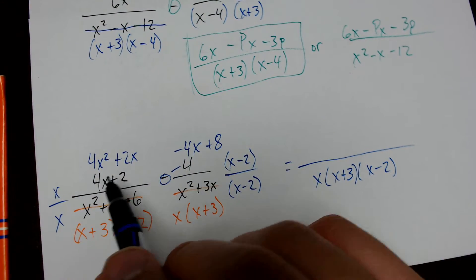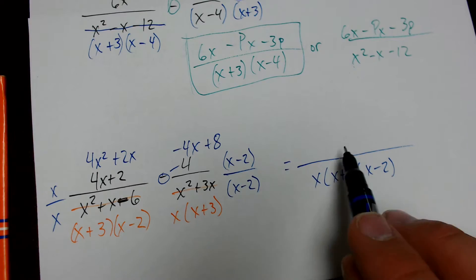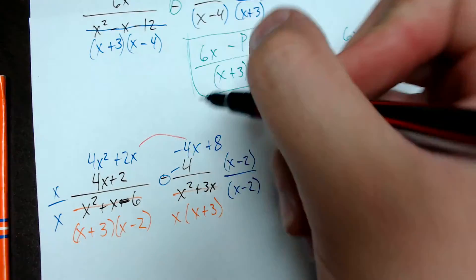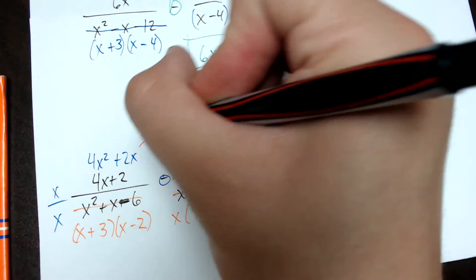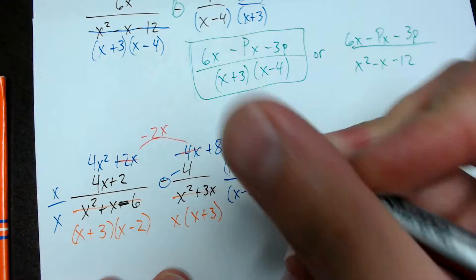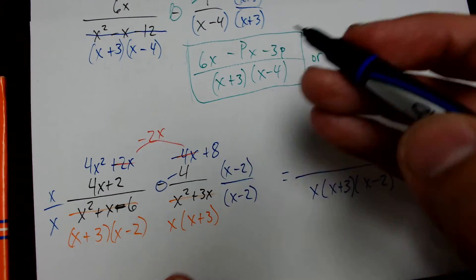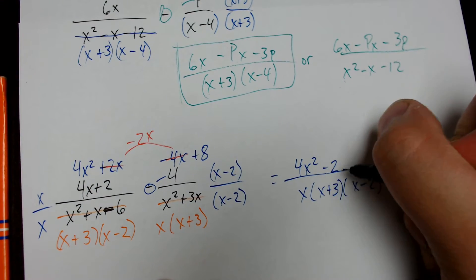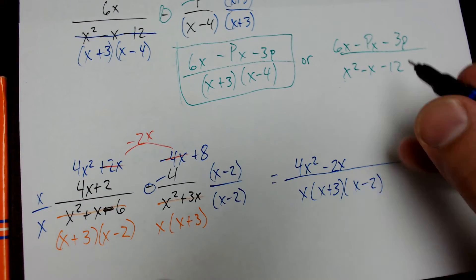So, now, I've got this numerator. And I want to see if I can add like terms before I write it over here on my answer. Like terms I can add are the x's. So, 2x minus 4x is going to be negative 2x. So, the final numerator I'm going to get is going to be 4x² minus 2x plus 8.